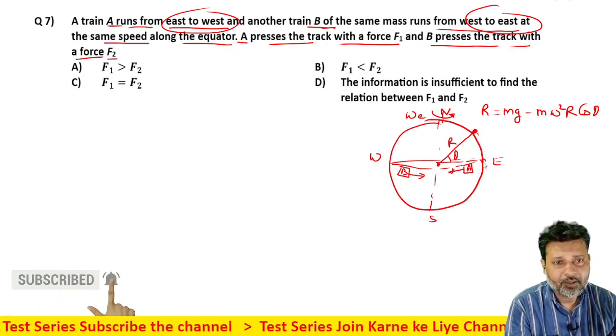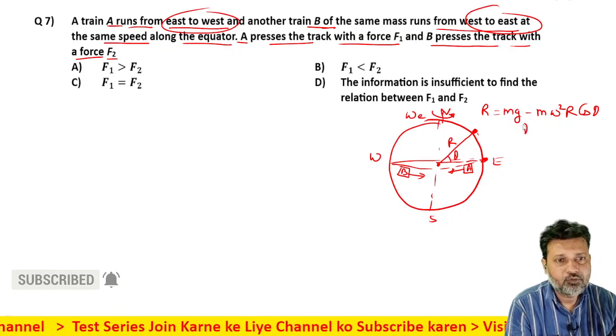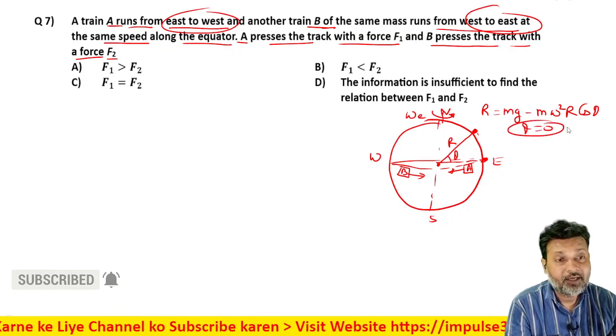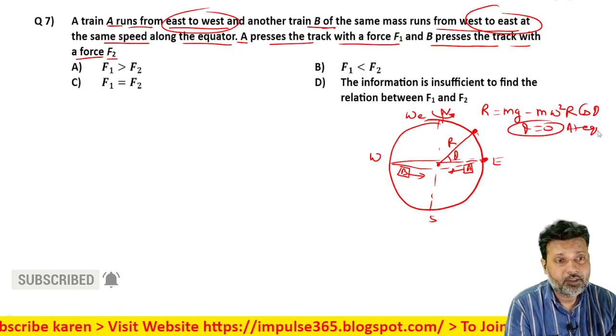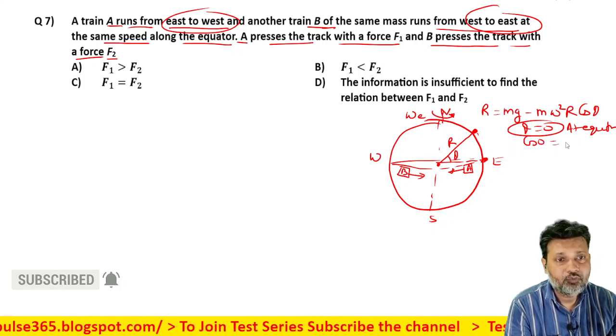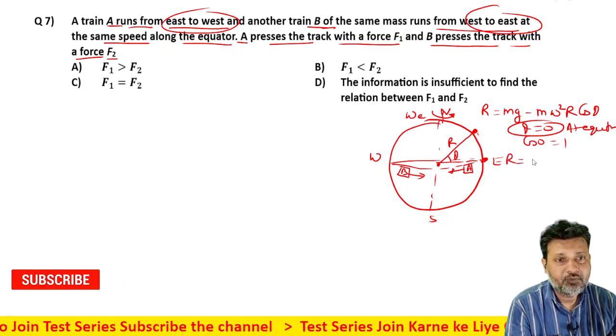If you go to the equator, theta value becomes zero. At equator, cos(0) equals one, so the normal reaction value becomes N = mg - mω²r.